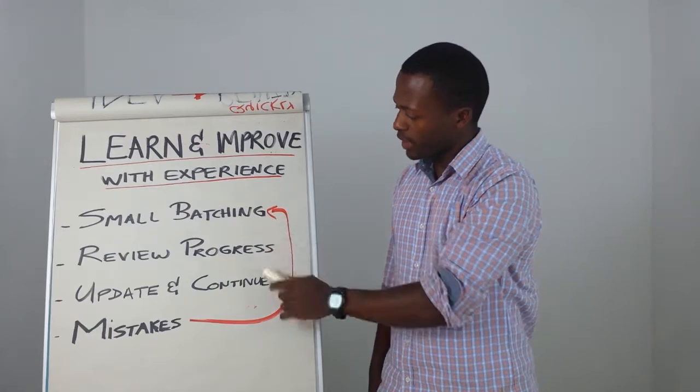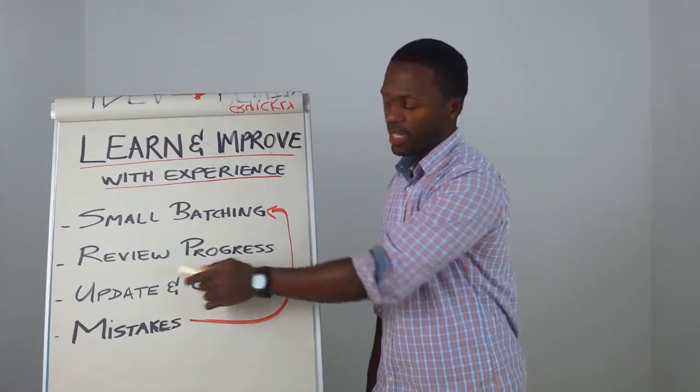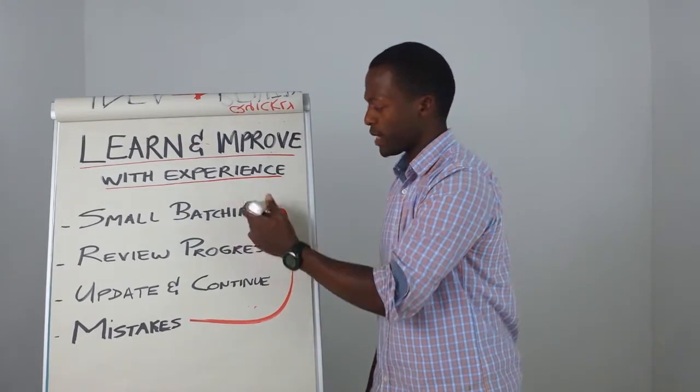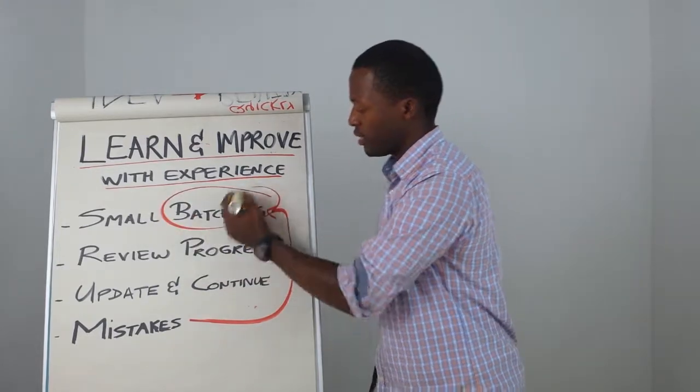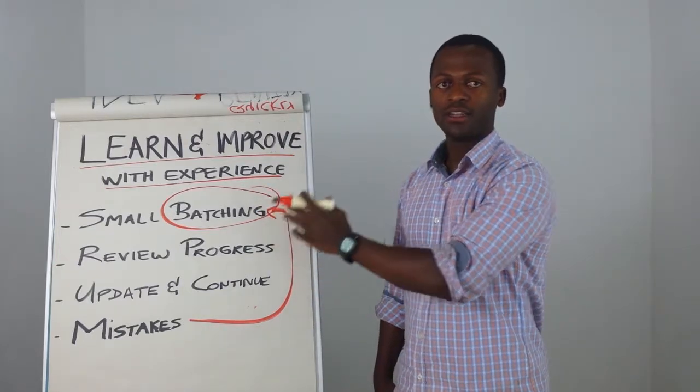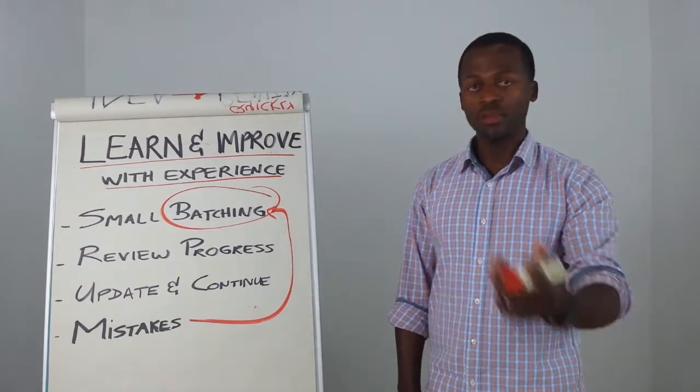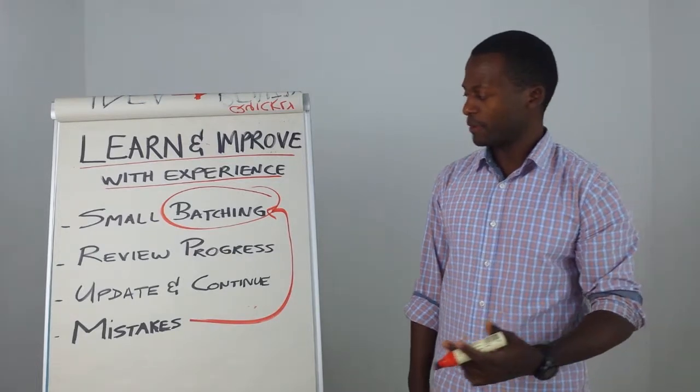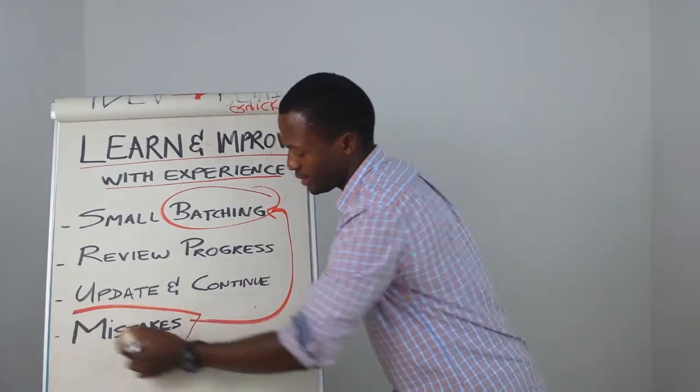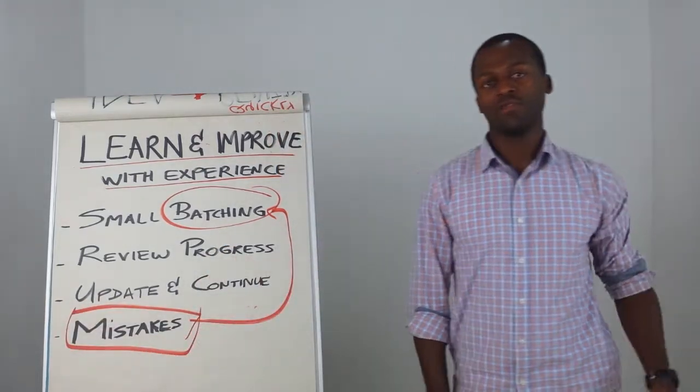Use your small batch, whatever it is that you have to offer, sell it, review, update and continue. You do another batch, test it, implement whatever it is that you want to implement, and then you improve as you go along because mistakes are part of life.